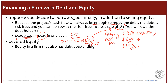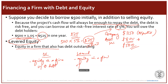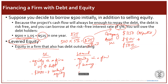The equity in a firm with debt is referred to as levered equity. Unlevered equity means equity in a firm with zero debt. Levered equity is equity in a firm with leverage. In our earlier example, the 1,000 dollars was unlevered equity. Here, the equity we are dealing with in this new example is called levered equity.